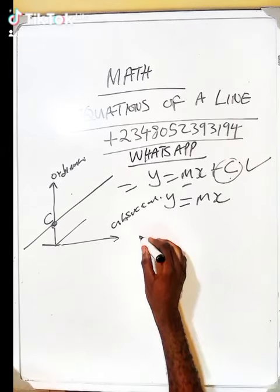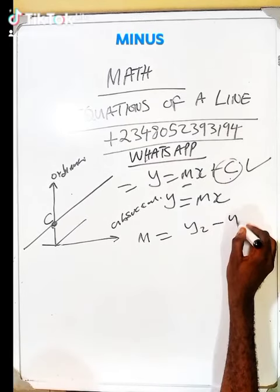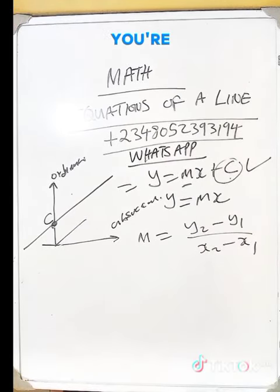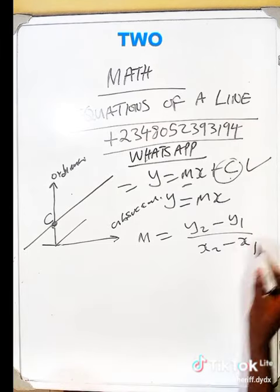The other one is we're going to know that the gradient m equals y2 minus y1 over x2 minus x1. This is when you're looking for the gradient of a line when you have two points.